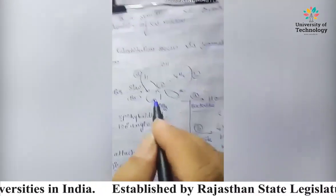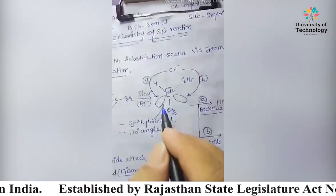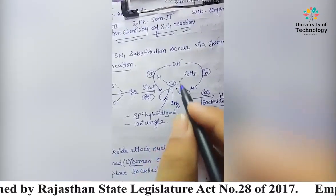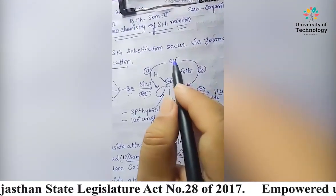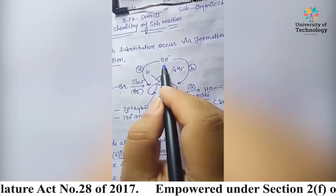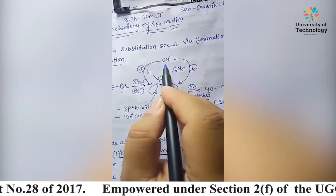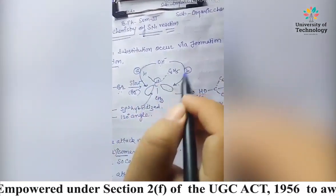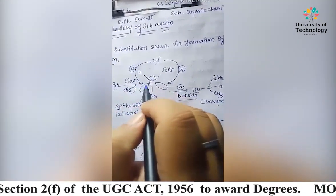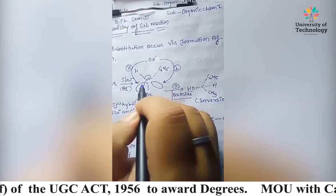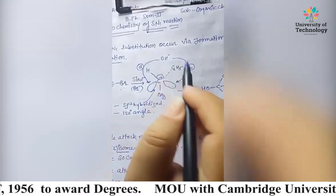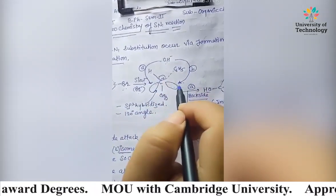The bond angle in the carbocation is 120 degrees. In the second step, the nucleophile attacks. There are two possibilities: the nucleophile can attack either the backside or the front side.